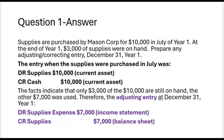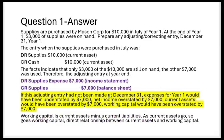Now, you know what else the exam could ask for here? They could say: what if this adjusting entry was not made? Tell me about the impact on expenses, revenue, net income, assets, liabilities, and working capital. So we got the right answer for question one, but what if it wasn't made? If this adjusting entry had not been made at December 31st, year one, then expenses for year one would have been understated by $7,000 because the supplies expense would never have been recorded.